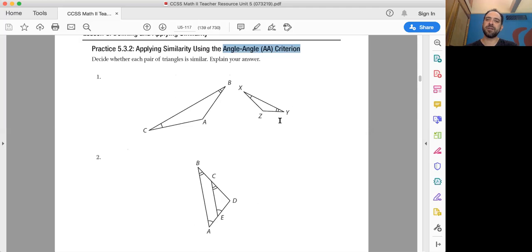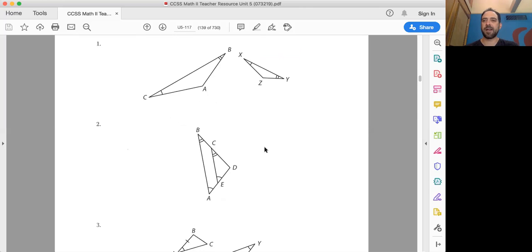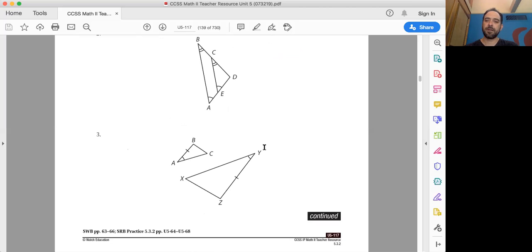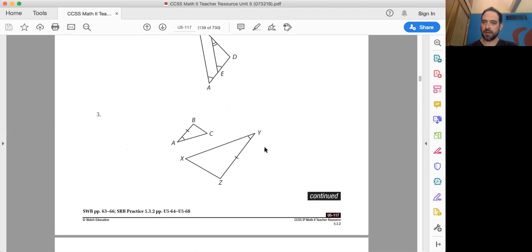So we're looking for angle-angle criterion, but just know every time you have that you're gonna have angle-angle-angle because the third angle is always gonna also be congruent. Alright, let's do B, and then we'll go on to the next group.